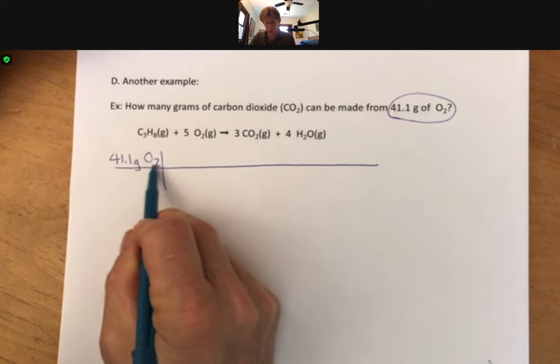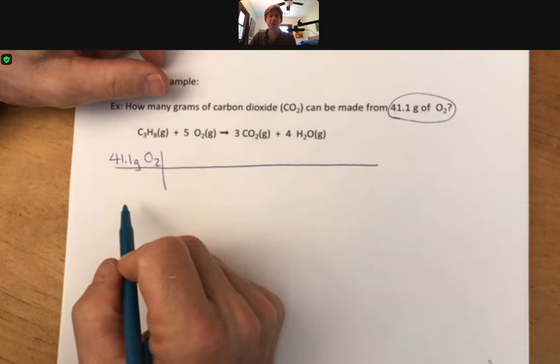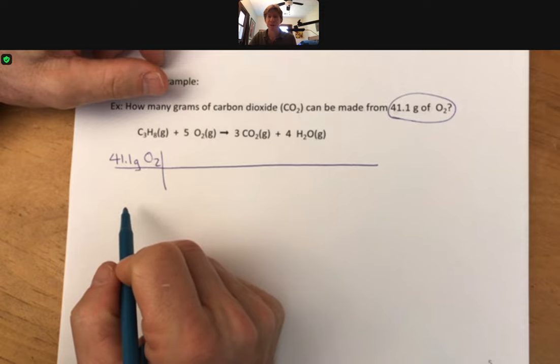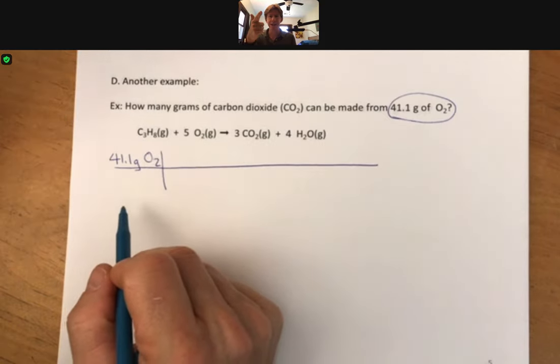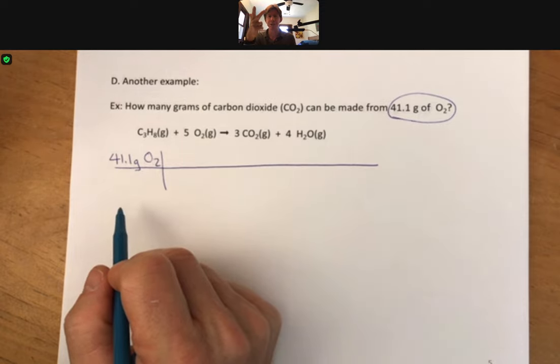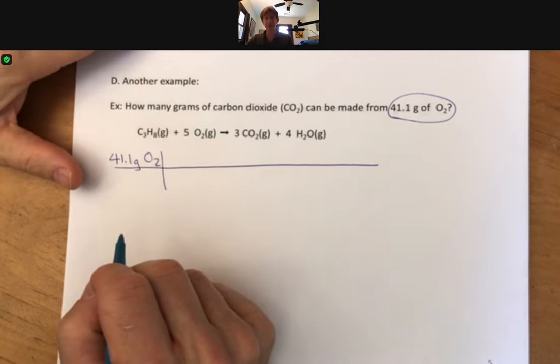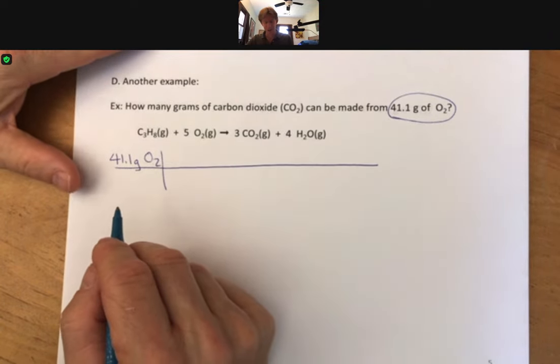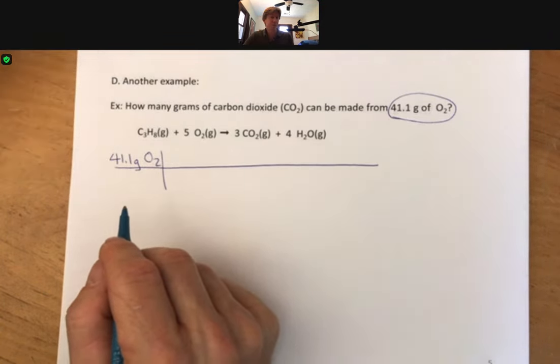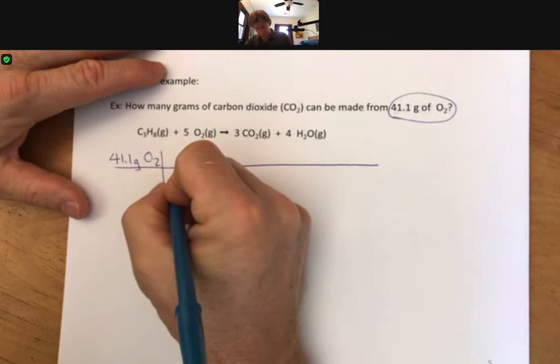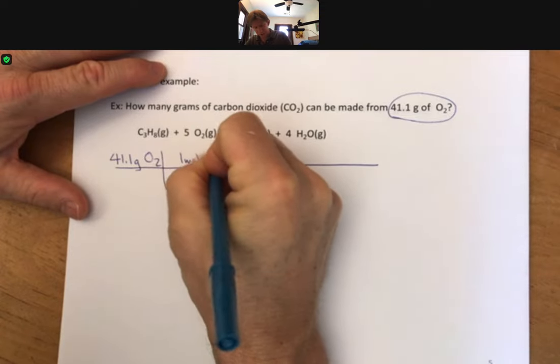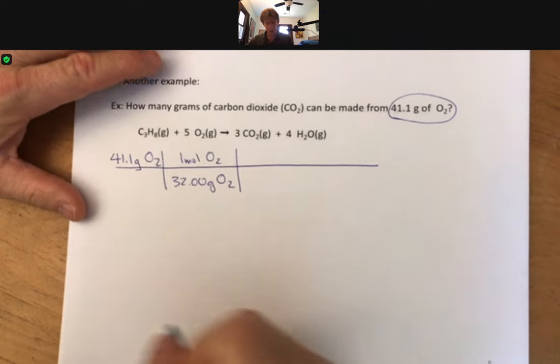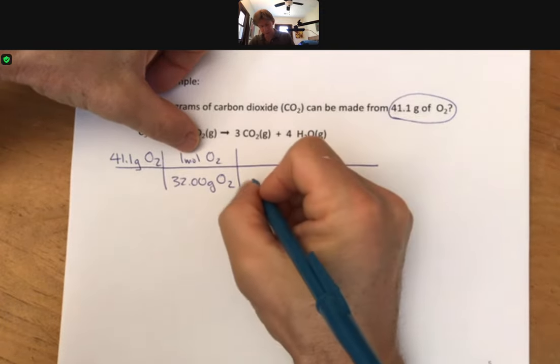And as a hint, anytime I give you grams of something and you know what its formula is, you can bet you're going to be going to moles 99 plus percent of the time in this class, and then in general chemistry should you go on, which we hope you will, and all the way to organic chemistry as well and beyond. Mostly when they give you grams they need you to turn into moles in chemistry. Oxygen, 32.00 grams of oxygen for one mole.